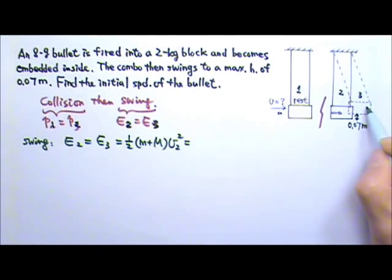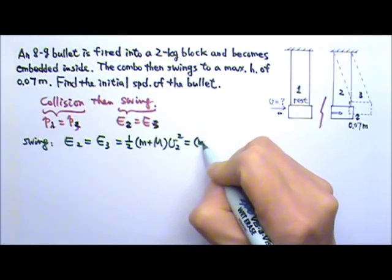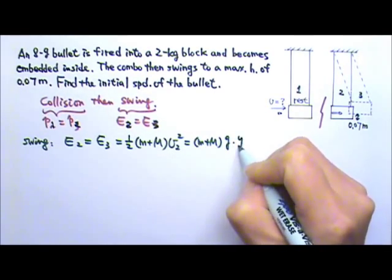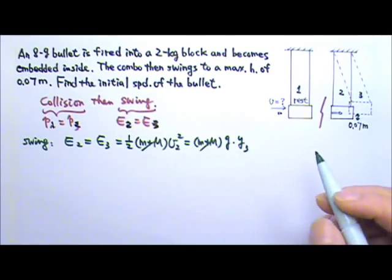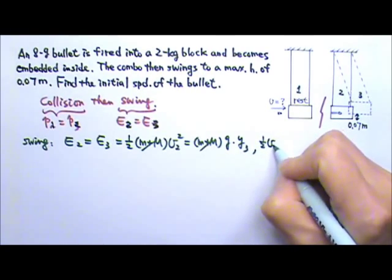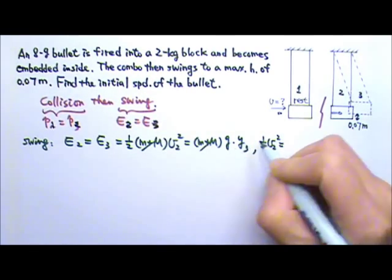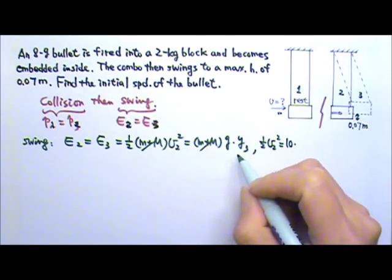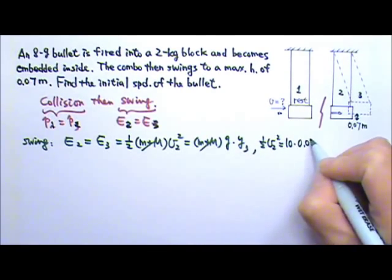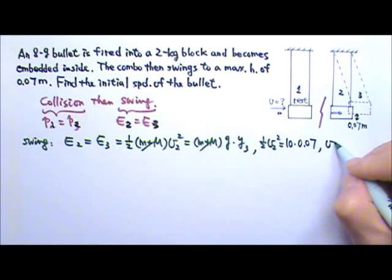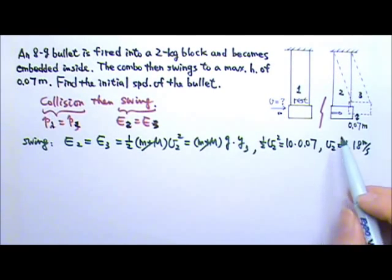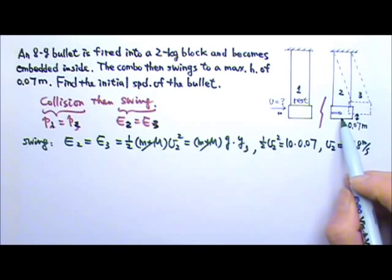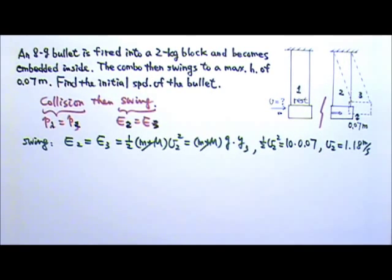At stage 3, the maximum height, we have M, G, Y. The mass cancels, and that means one half V2 squared would equal to G. I'm just going to use 10 for G, and the maximum height is 0.07. So from here, I can find V2 to be 1.18 meters per second. And that is the speed of the combo at the bottom of the swing and at the end of the collision.